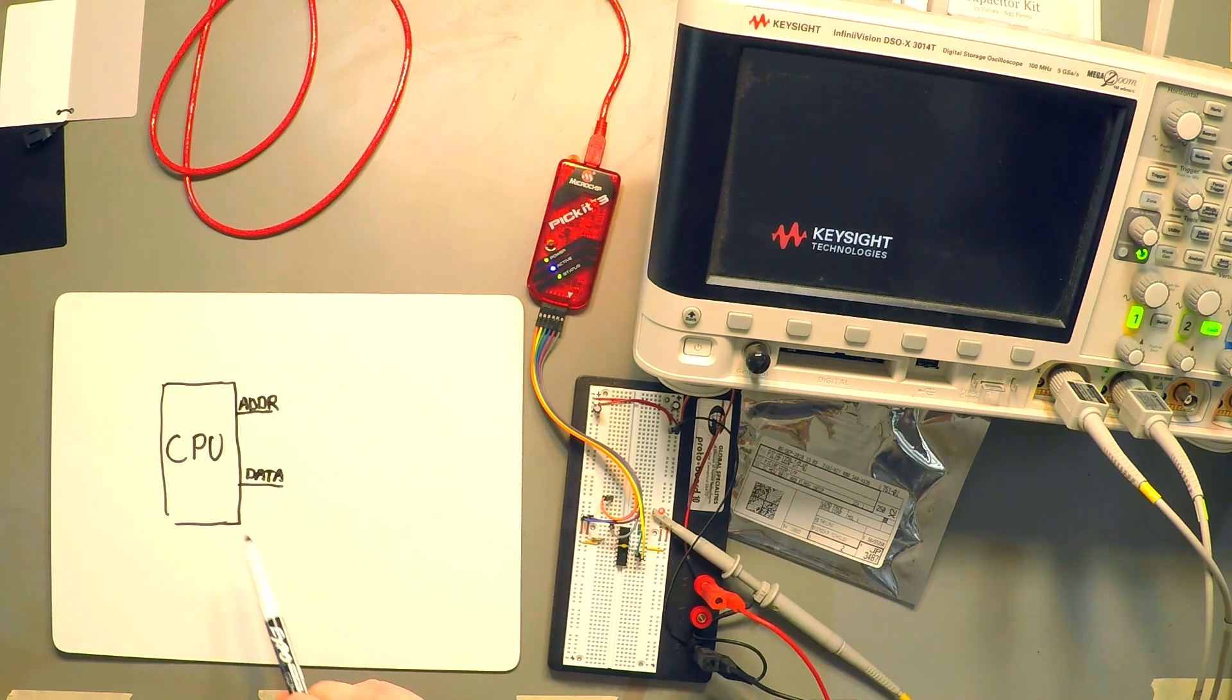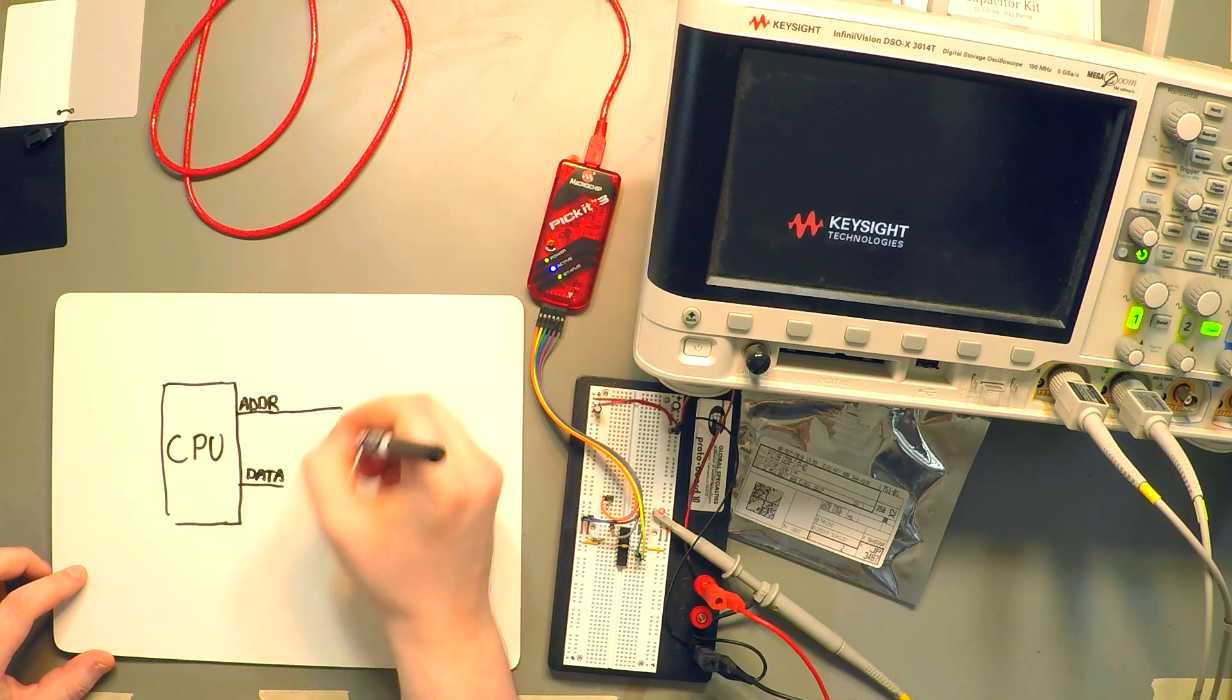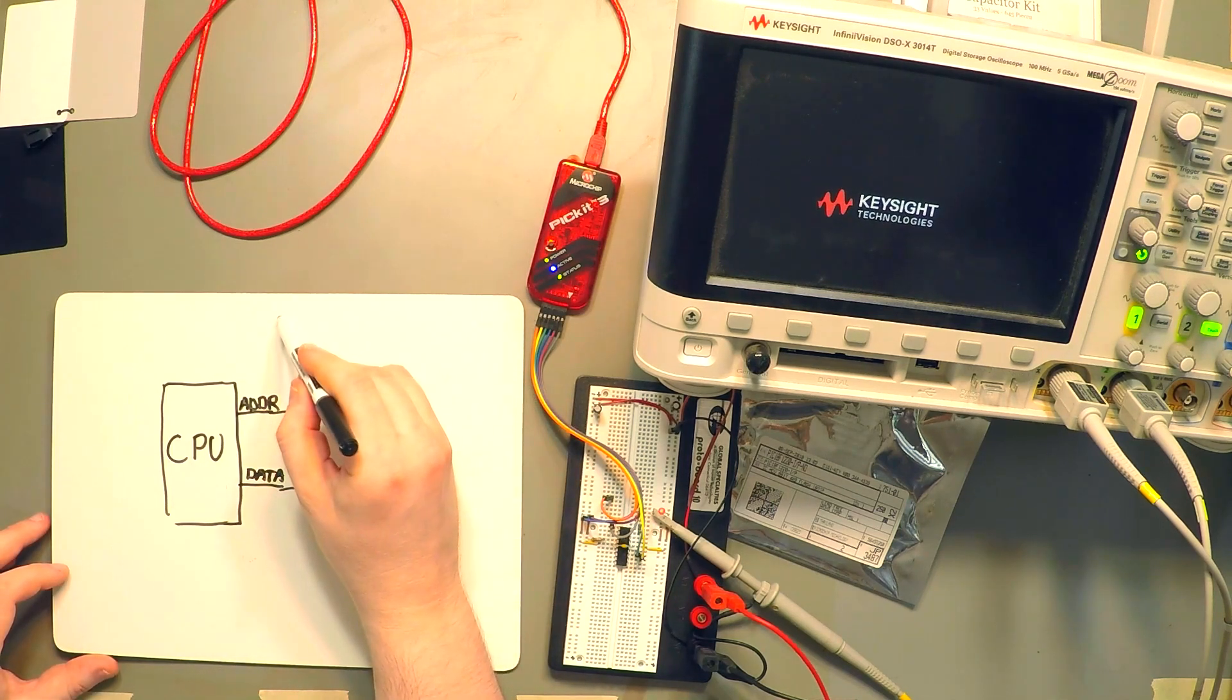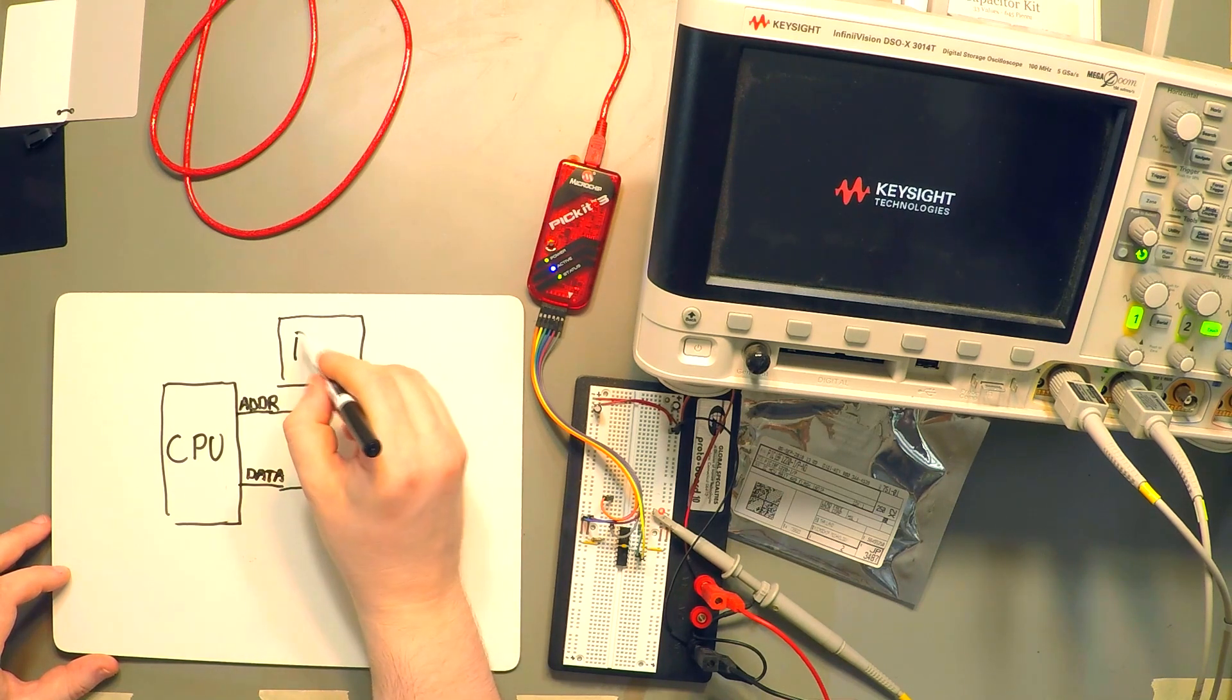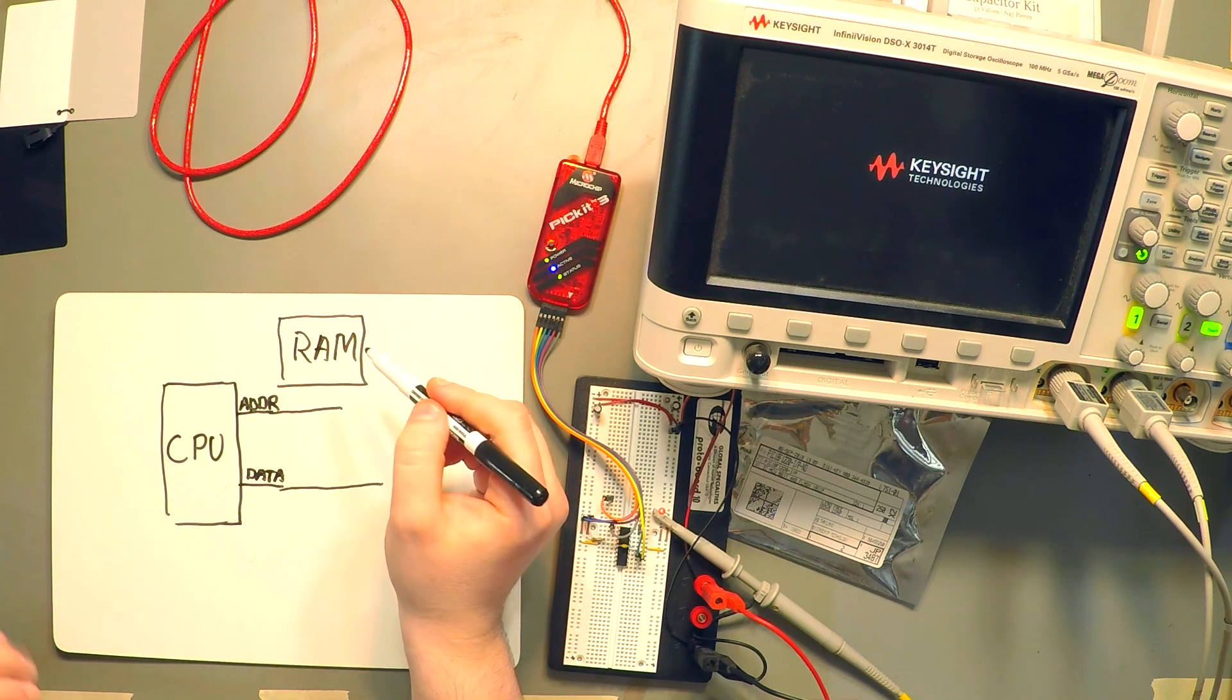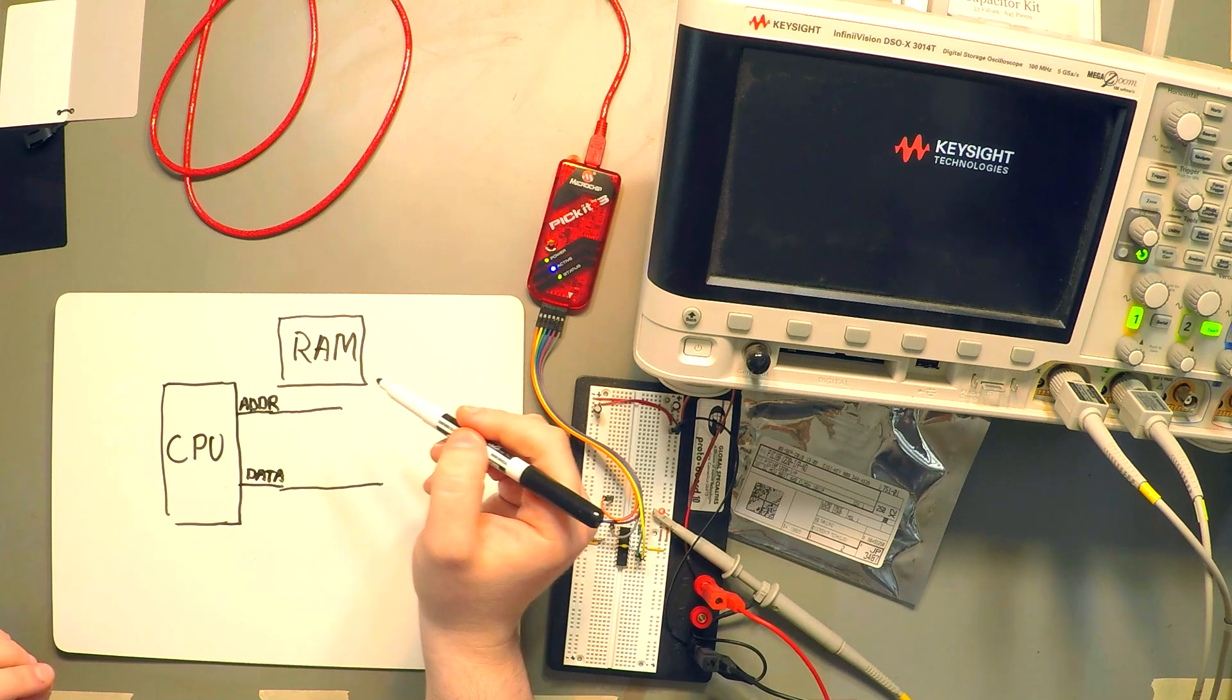So we're going to add some components onto our microcontroller to help improve the functionality. So the most common component that we'll add is some RAM or random access memory which will hold, which will function as a little scratch pad for us performing some calculations and things like that. So we'll connect that to the address and the data bus.